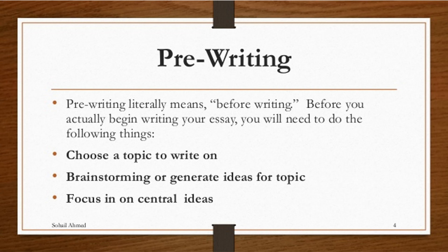First, you have to know what topic you are writing on — let's take the topic of land pollution. Second, brainstorm and generate ideas for the topic — pull up your brain with many ideas related to that topic. Then select the main ideas that are related to your topic. Last, focus on the central ideas that are actually relevant to that topic.